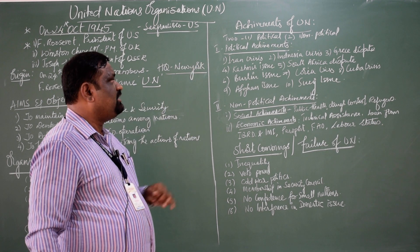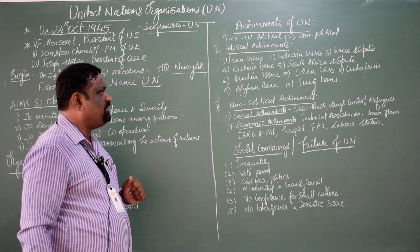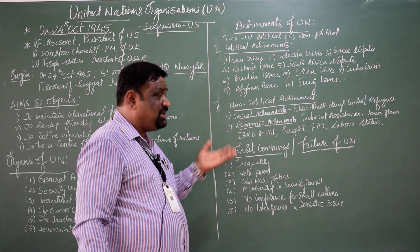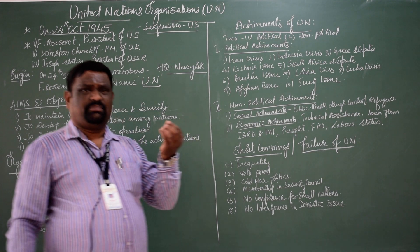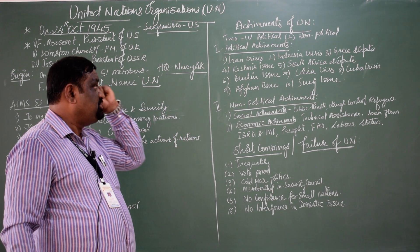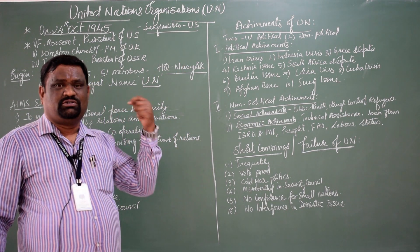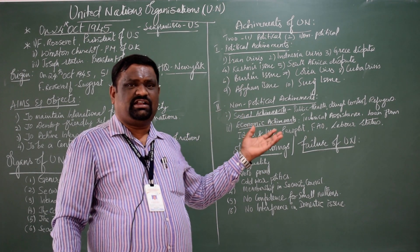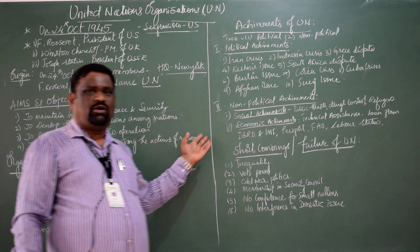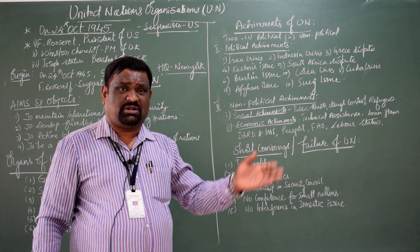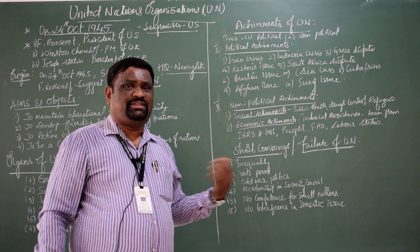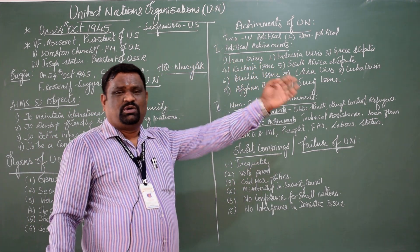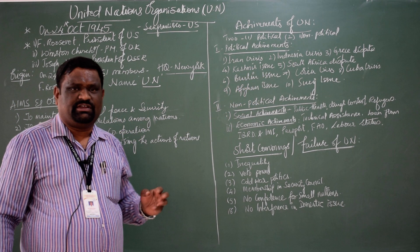Under political achievements, the notable crises resolved include: Iran, Indonesia, Greece, Kashmir, South Africa, Berlin, Korea, Cuba, Afghanistan, and water disputes. With all its efforts, the UN has succeeded in achieving and resolving problems between nations — not only water, petroleum, and border issues but regional conflicts as well. I will brief each of these to show how the UN deployed task forces to resolve issues rising between countries.